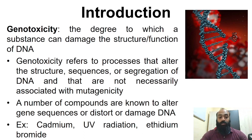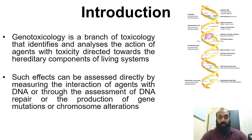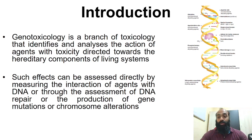There are a number of compounds which are known to alter the gene sequences or distort and damage DNA — for example cadmium, which is a heavy metal; UV radiation coming from the sun; and ethidium bromide, which is a chemical routinely used in molecular biology studies. Genotoxicology is a branch of toxicology that identifies and analyzes the action of agents with toxicity directed towards the hereditary components of living systems. These effects can be assessed by measuring the interaction of agents with DNA, through assessment of DNA repair, or the production of gene mutations or chromosomal alterations.